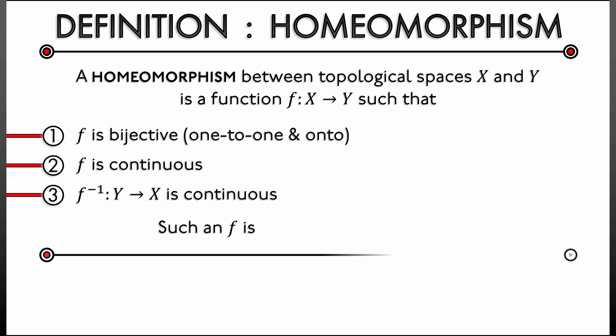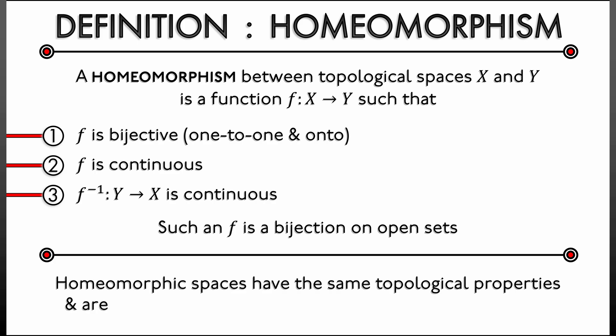Which means that it is a bijection on neighborhoods as well. So it not only matches up all the points between the spaces, it matches up all the neighborhoods. It matches up the topology. It gives you equivalent topologies on these two spaces. So we say that homeomorphic spaces have the same topological properties. They're topologically equivalent.